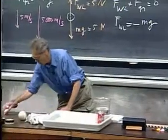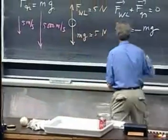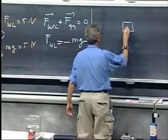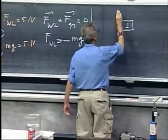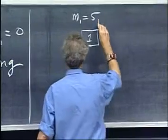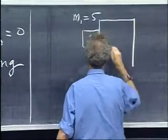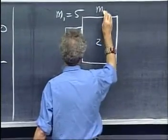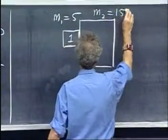Let us work out a very simple example. We have an object which has a mass M1. This is object number one. And M1 is five kilograms. And here, attached to it, is an object two. And M2 equals 15 kilograms.